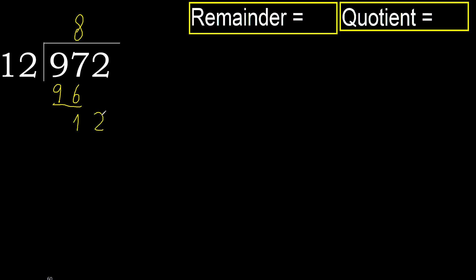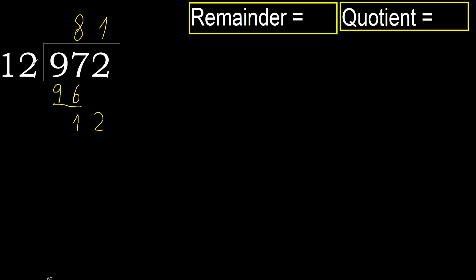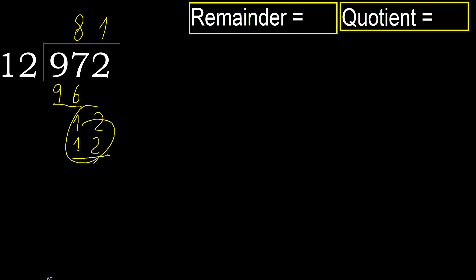Next. Bring down 12. 12 multiplied by 2 is 24, which is greater. Multiplied by 1 is 12, which is not greater. Subtract.